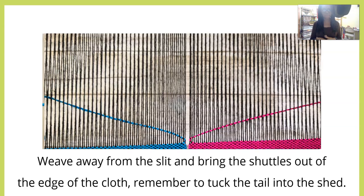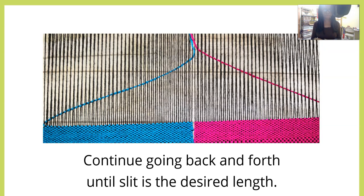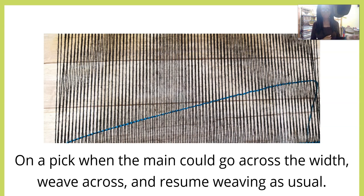On the next pick, beat and then change sheds. Weave away from the slit and bring the shuttles out of the edge of the cloth. Remember to tuck in that tail of the yarn you just added. Continue going back and forth until the slit is the desired length. On a pick when the main color could go across the width, weave across and resume weaving as usual.